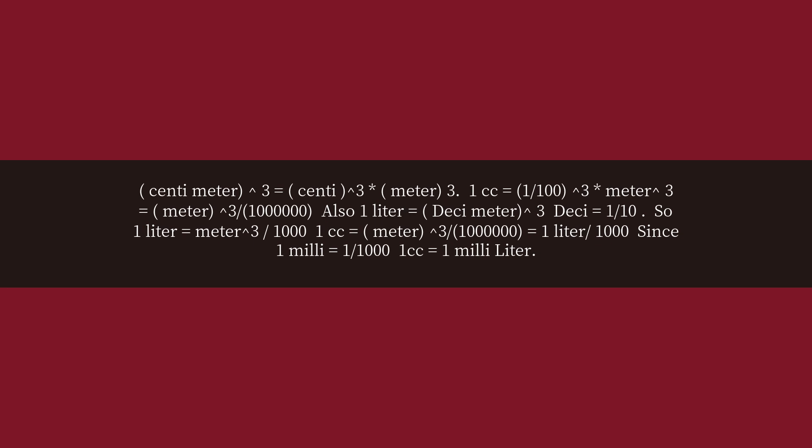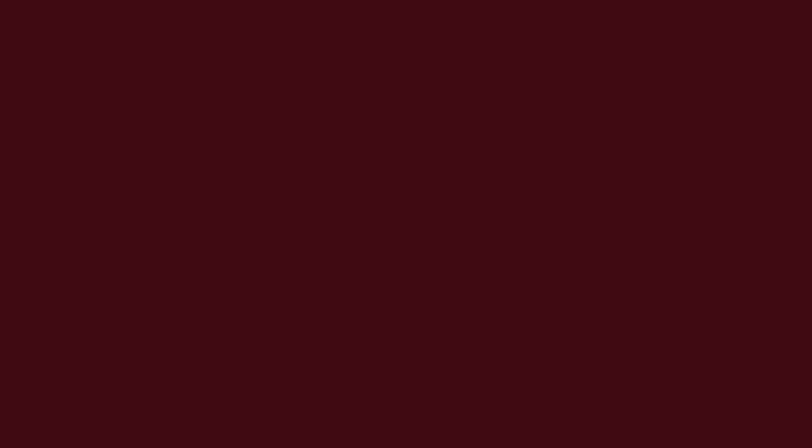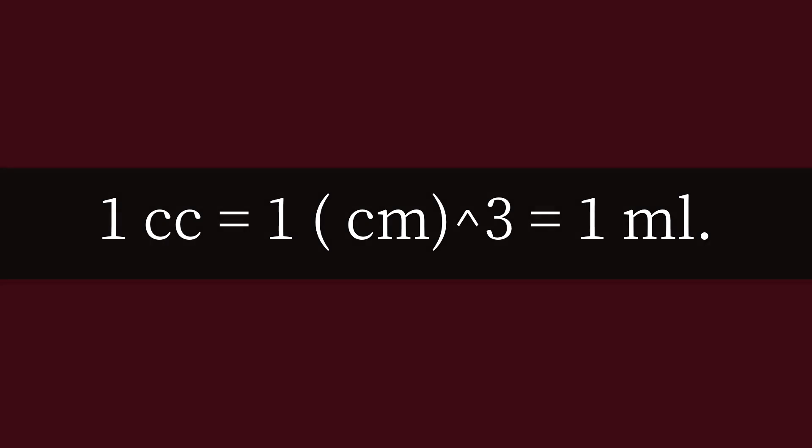Since 1 milli equals 1/1000, 1 cubic centimeter equals 1 milliliter. Therefore, 1 cubic centimeter equals 1 cm^3 equals 1 milliliter.